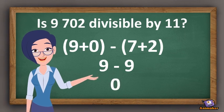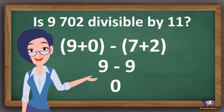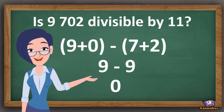If the difference is 0 or any number divisible by 11, then the number, regardless of how big it is, will automatically be divisible by 11.